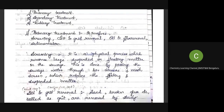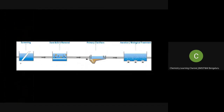Primary treatment involves several steps: screening, silt and grit removal, oil and grease removal, and sedimentation. In screening, large suspended materials and floating matter are physically removed with the help of bar screens or mesh screens. When water passes through the mesh, all suspended matter is retained and the water passes to the next chamber.